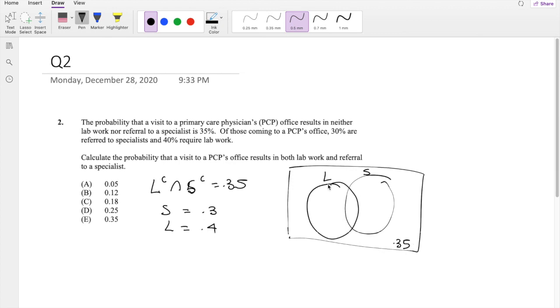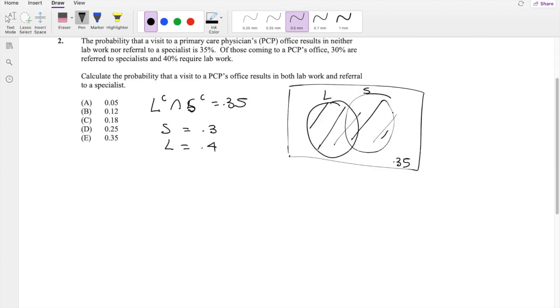So then that means we know this. So if you know the outside is 0.35, L union S is exactly just 1 minus 0.35, which is just equal to 0.65.